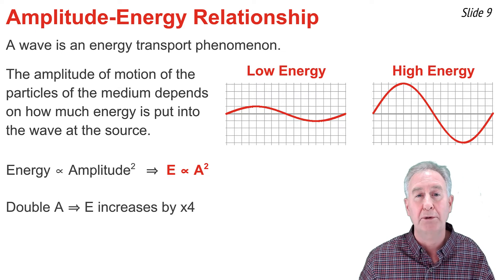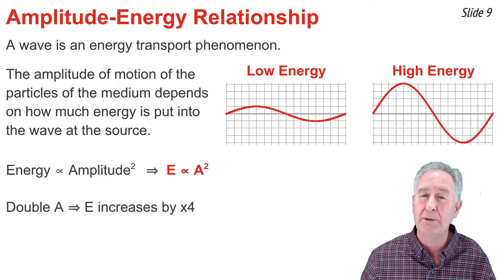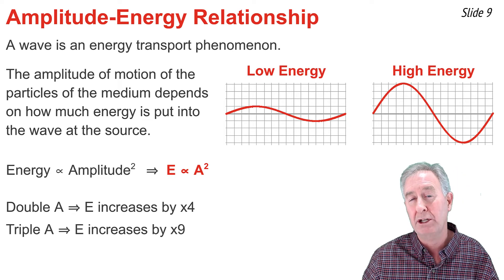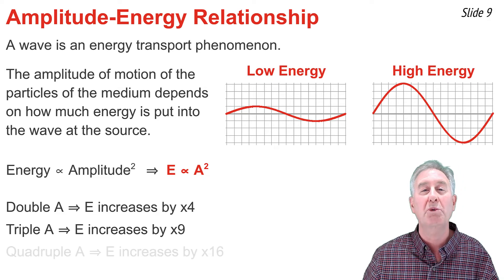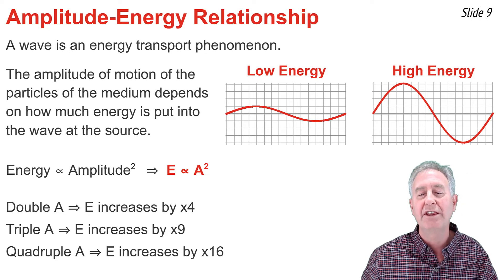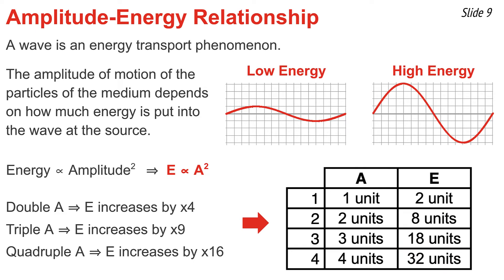Because energy is proportional to amplitude squared, doubling the amplitude increases the energy transported by a factor of 4, tripling the amplitude increases energy by a factor of 9, and quadrupling the amplitude means 16 times as much energy is transported. This is reflected in a table showing amplitude doubled from 1 to 2 with energy increasing by a factor of 4, and amplitude tripled from 1 to 3 with energy increasing by a factor of 9.